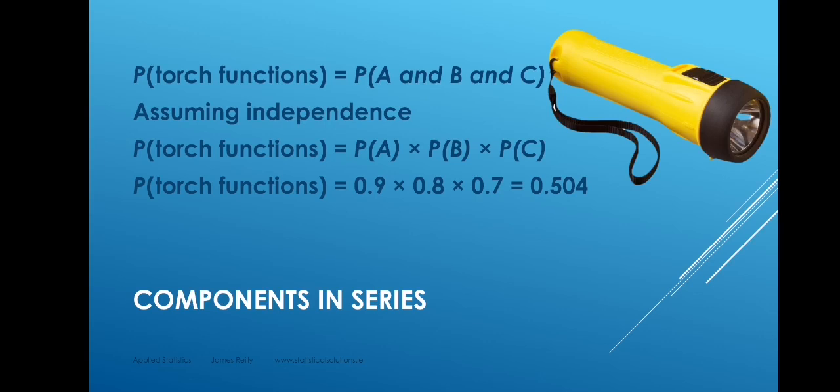If the torches are made in a factory where the different components are, if you like, randomly assembled together, then this assumption is true. This means that if we pick up a defective battery, it's no more or no less likely to be combined with a defective switch. So we assume independence when we multiply together the three probabilities: 0.9 times 0.8 times 0.7 gives us 0.504, so that's the reliability of the system.